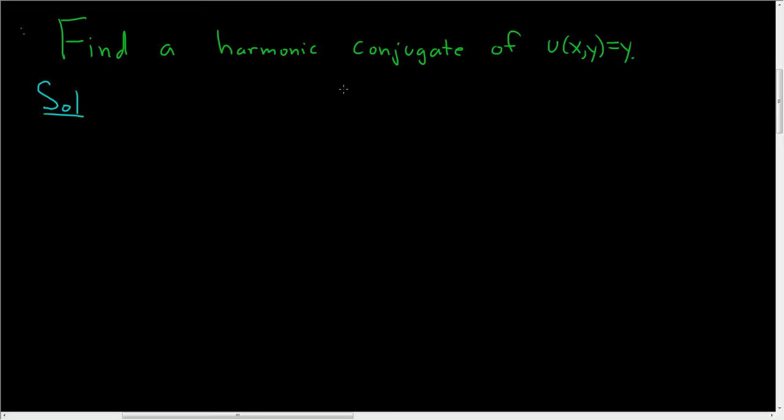So it's asking us for a harmonic conjugate of u(x,y) = y. In other words, it's asking us to find a function v such that f, which is equal to u + iv, is analytic.